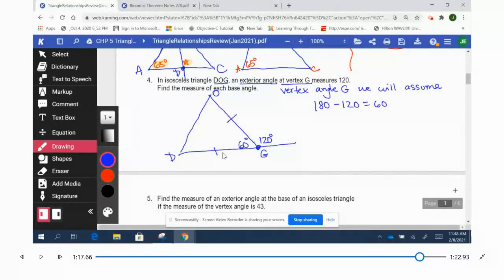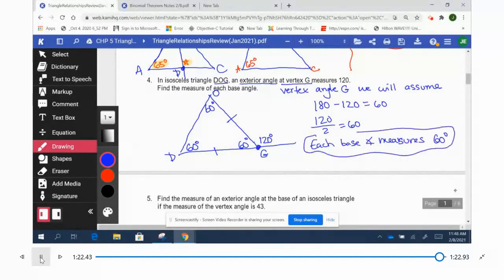These two sides are definitely the same, those are the legs, that's the base, this would be the vertex angle. So 120 out here, 180 minus 120 is 60, so that's going to make all of them 60. The base angles are both 60s, happens to be equilateral. That's the end of the first page of the review packet.